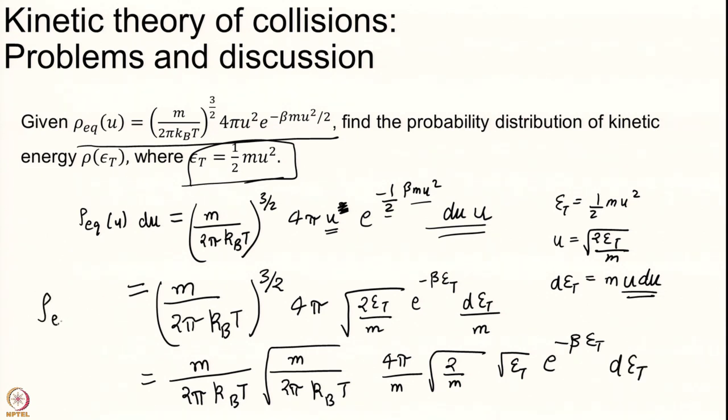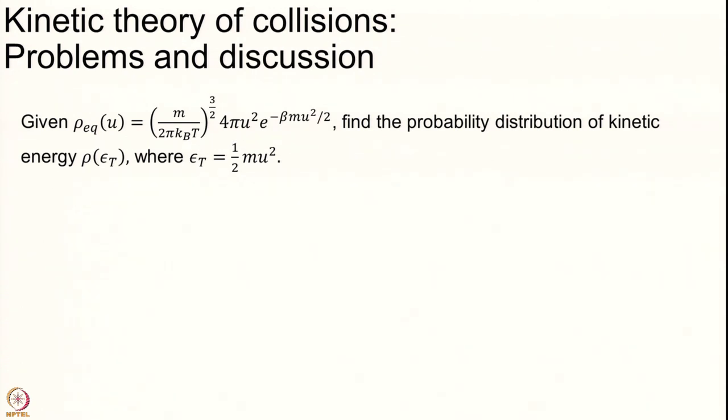Let me just write this to be correct. I have converted now. I will see several factors are going to cancel. m cancels with m, 2 pi cancels here with to give me 2. This cancels. m cancels with m, this 2 cancels with this 2.